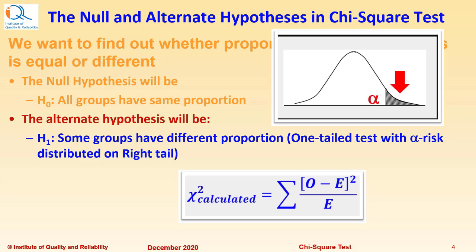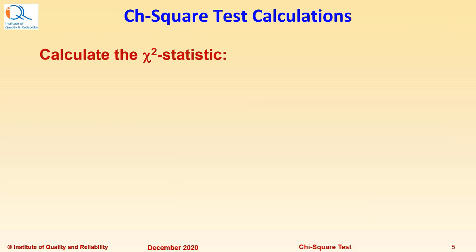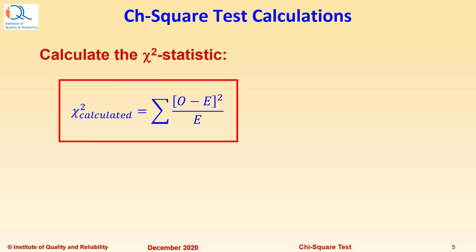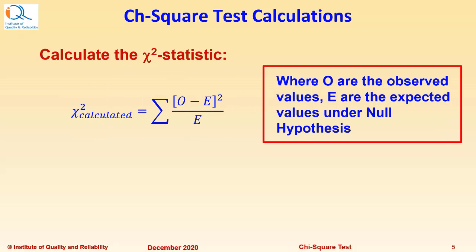Therefore, we need to only look at the right tailed value of the Chi-square distribution. You can calculate the Chi-square statistic with this formula. Chi-square calculated value equals summation of observed values minus expected values bracket square upon expected values. O is the observed values and E represents expected values under null hypothesis.